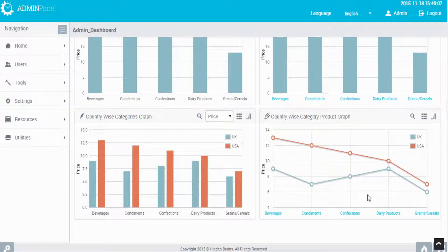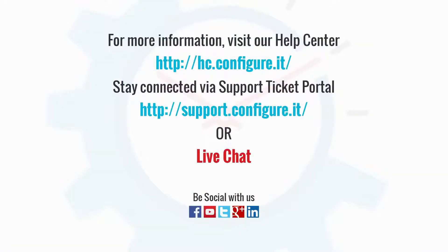So this was all about configuring graphs by taking two row, one column, and one calculated value. For more information, visit our help center. Stay connected via a support ticket portal or live chat, where our support team will assist you. Keep configuring.